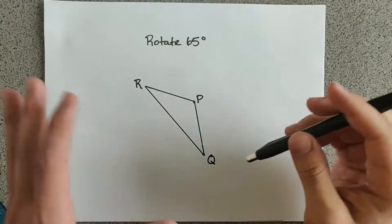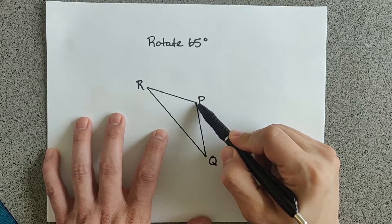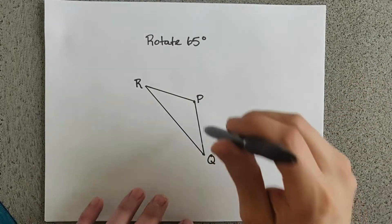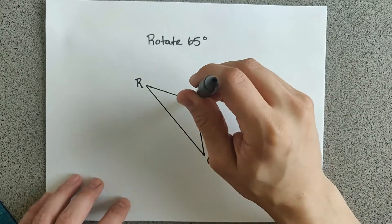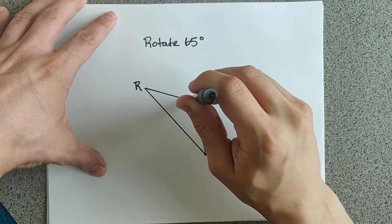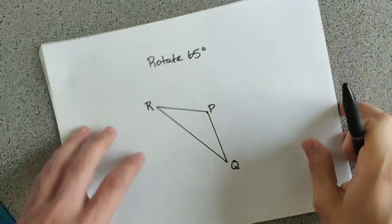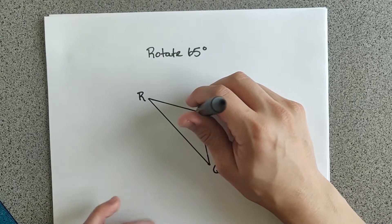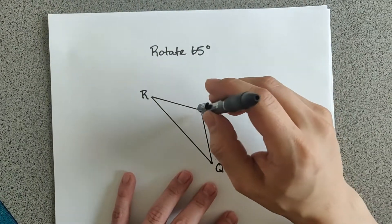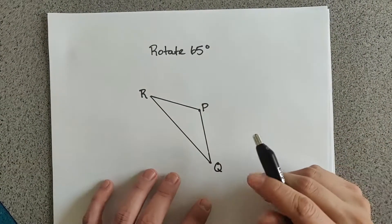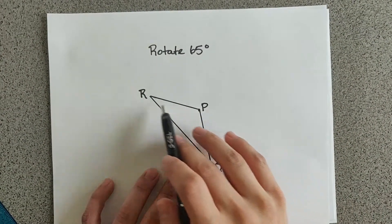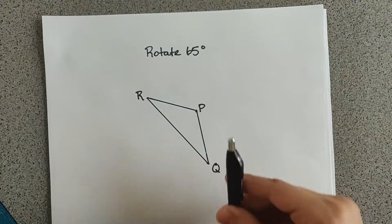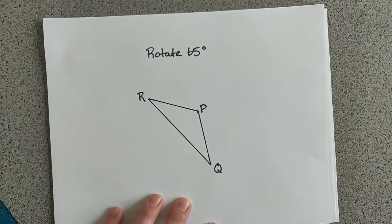Here's the second problem. As you can see, point P is on the triangle. But all we're really doing is rotating about point P — so you can put your pen at point P and rotate everything 65 degrees. You start at point P and draw a straight line to the points you want to rotate. But as you can see, there's already a straight line drawn from P to R and from P to Q. So we're going to rotate each of those lines 65 degrees.